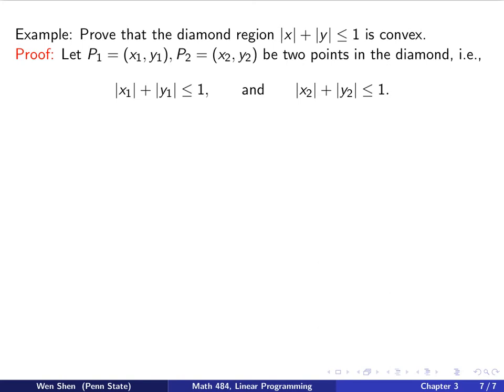So let's pick two points in the diamond. I call P1, which has coordinates (x1, y1), and P2, which has coordinates (x2, y2). Two points in the diamond. What does it mean? Well, that means they satisfy this inequality. So |x1| + |y1| is less than 1, and |x2| + |y2| is less than 1.